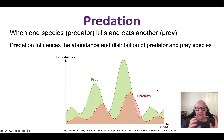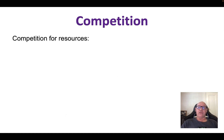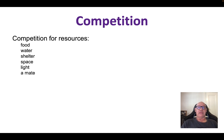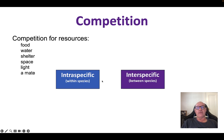So predation: one species kills another, and the interaction influences the abundance and distribution of both species. The next relationship is competition — competition for resources between and within species. Species might compete for food, water, shelter, space, or light, for example in a rainforest ecosystem where they're competing for sunlight for photosynthesis. There might also be competition for a mate, which is intraspecific competition.